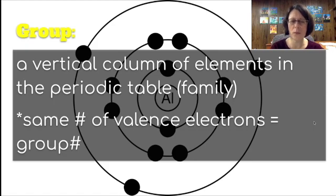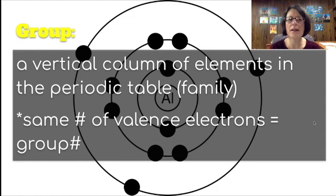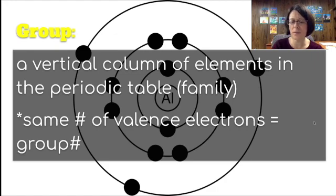One of the arrangements on the periodic table are groups, and these are the vertical columns of elements in the periodic table. We sometimes call them families. The special thing about groups is that all of the elements in a group have the same number of valence electrons, and that number also corresponds to their group number.